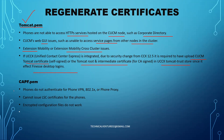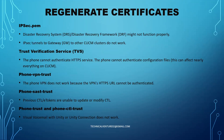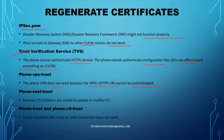If the CAPF.pem certificate is expired, phones will not authenticate for phone VPN, 802.1x, or phone proxy, it cannot issue LSC certificates, and encrypted configuration files do not work. If the IPsec certificate is expired, DRS (Disaster Recovery System) may not function properly and IPsec tunnels to gateways and other CUCM clusters do not work. If the TVS certificate is expired, phones cannot authenticate HTTPS services or configuration files, which can affect nearly everything on the CUCM. Phone VPN will also not work if the VPN's HTTPS URL cannot be authenticated.